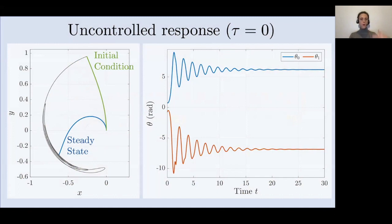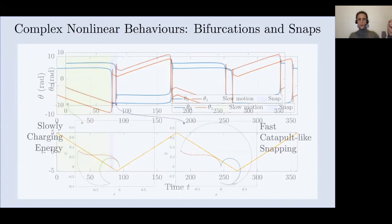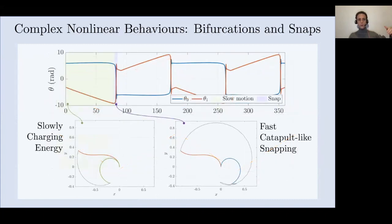This is how the open-loop evolution for some choice of system parameters looks like, both in the evolution of the shape and evolution of the only two configurations. This model is also able to present very complex non-linear behavior due to bifurcation of equilibria. If you produce a very slow change of the control action, the robot will slowly charge its potential energy into the structure in about 80 seconds, and then in a few seconds snap, producing a catapult-like behavior.